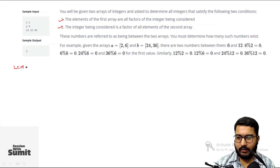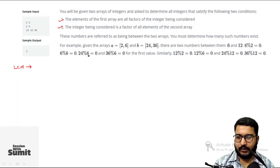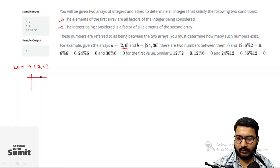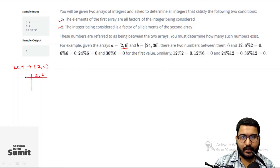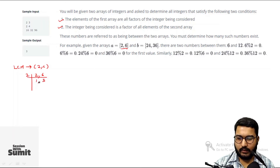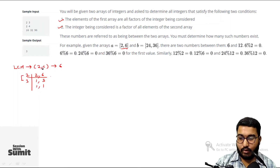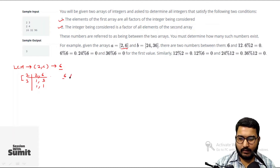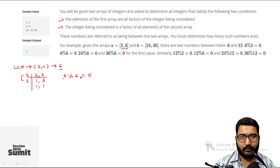For example, if I have the series 2 and 6, I can find the LCM by dividing with the least numbers. Taking 2 first, then 3, I multiply 2 by 3 to get 6. So the LCM of 2 and 6 is 6. If I divide 6 by either 2 or 6, I always get a remainder of 0.